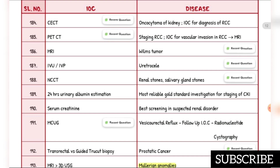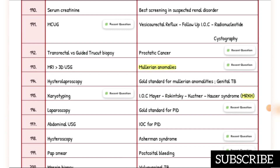Investigation of choice for renal stones, salivary gland stones: CCT. Most reliable gold standard investigation for staging of chronic kidney injury is 24-hour urinary albumin estimation. Best screening in suspected renal disorder is serum creatinine. For vesicoureteral reflux, follow-up investigation of choice is radionuclide cystography.